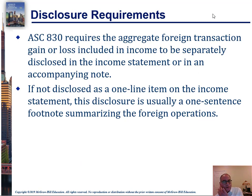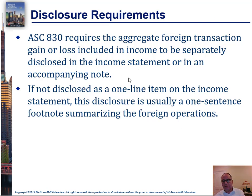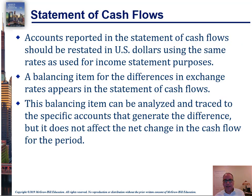A few other important notes — these are CPA questions, multiple choice questions on the CPA exam and they're worth knowing. You need to show your aggregate foreign transaction gain or loss on your income statement or somewhere in your notes. A lot of companies will aggregate the gains and losses and then offset them to show the net — total gains, total losses, and offset them. This could also be written in a one-sentence footnote. Your statement of cash flows also needs to be restated into U.S. dollars using the same rates, and you can make a balancing item for the differences in the statement of cash flows.